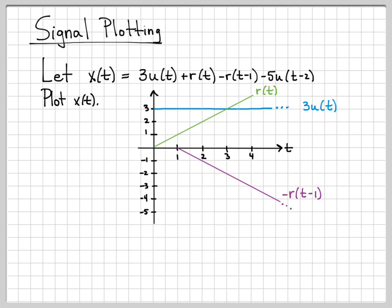The last component of this signal is minus 5u(t-2). That turns on at time 2, and it has a value of minus 5. And that value gets held for all time. So at time 2, it jumps down to minus 5, and then it holds this value for all time. So these are the four different pieces that comprise the signal x(t).